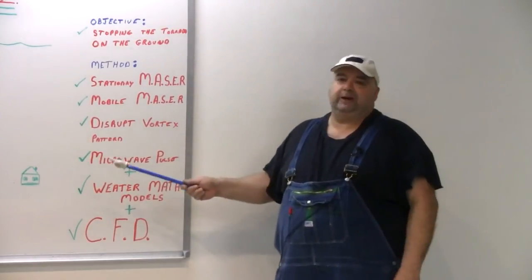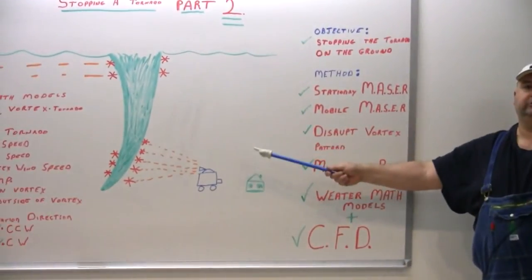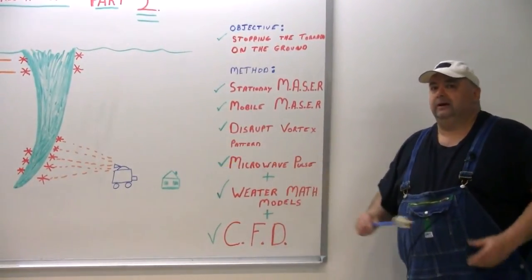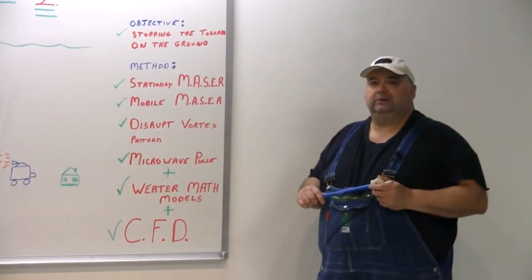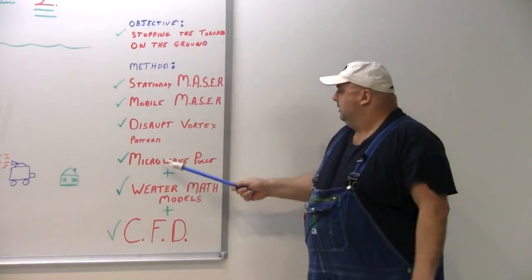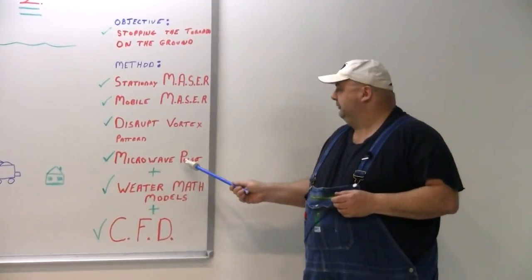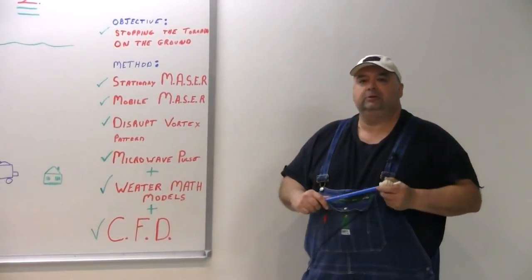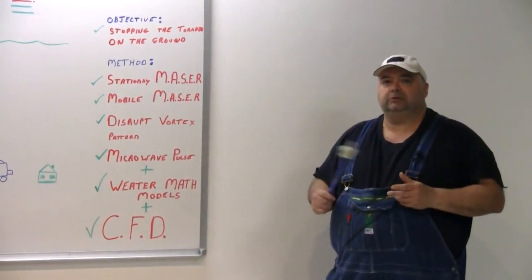The vortex is already established here. The tornado has, the frontal cloud has already touched down, and now it's a tornado. And this is the point here that we neutralize it on the ground where it's not destructive. We use the microwave pulse that I was talking about with a maser. Use weather math models, computational fluid dynamics, which I've talked about earlier before.